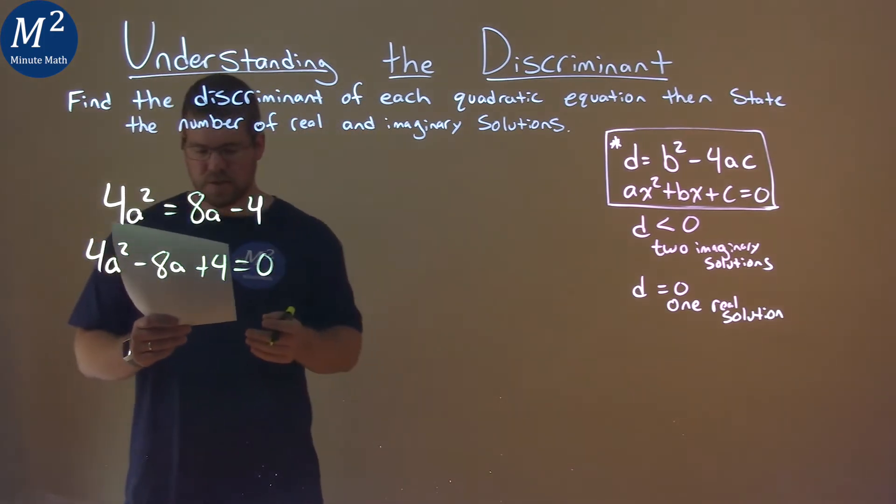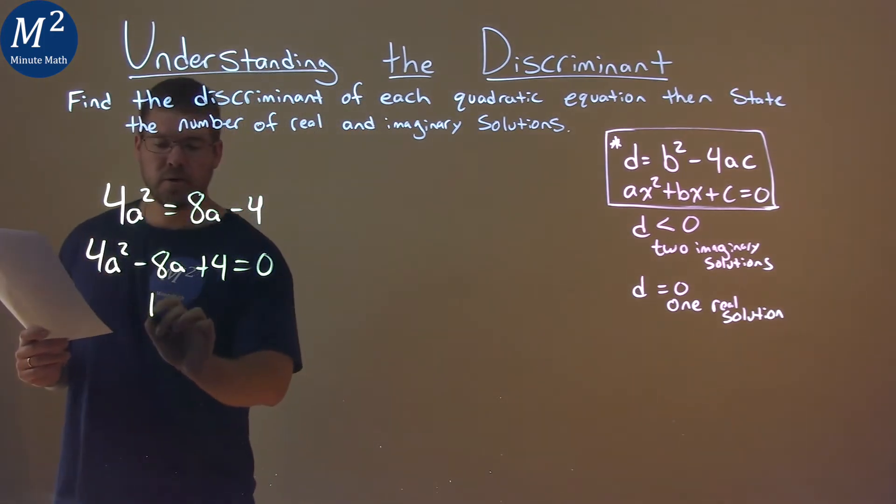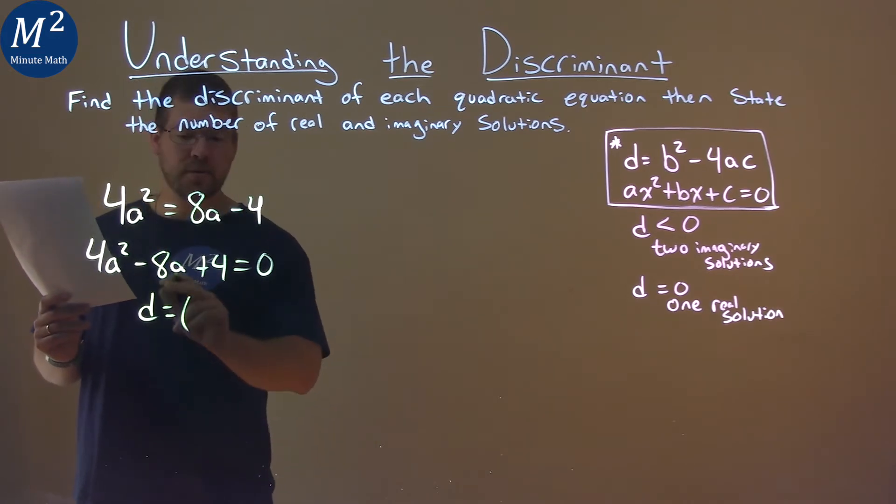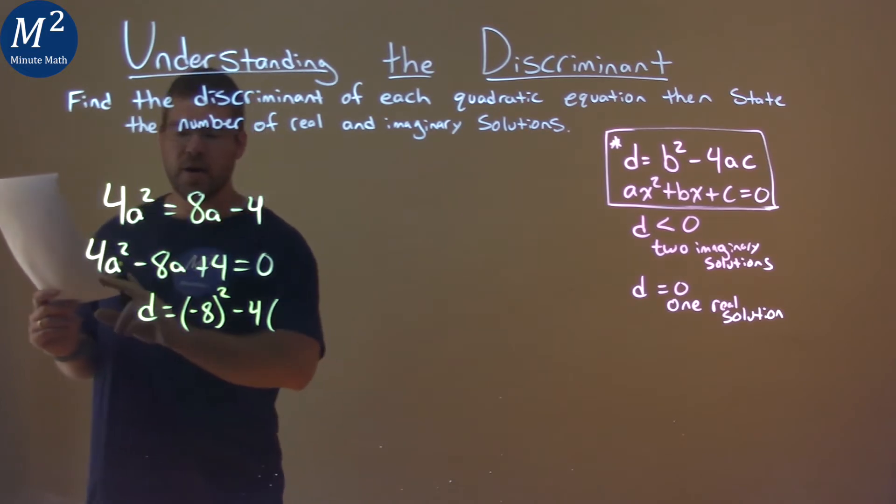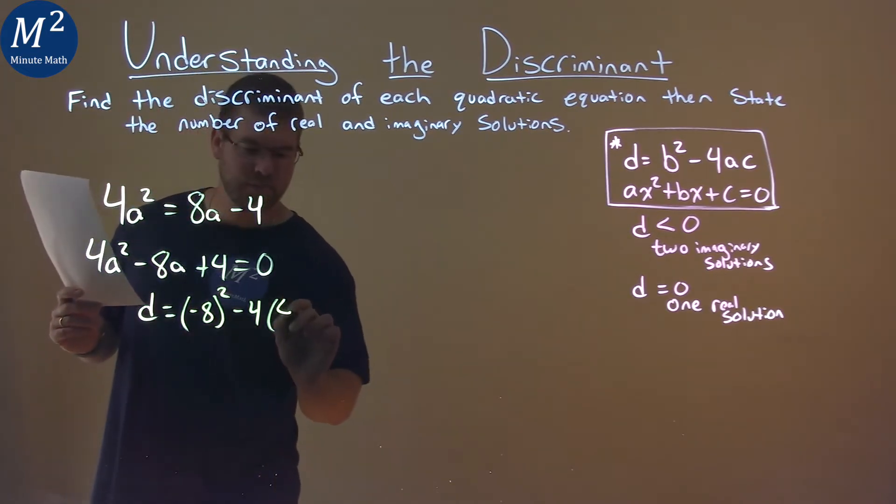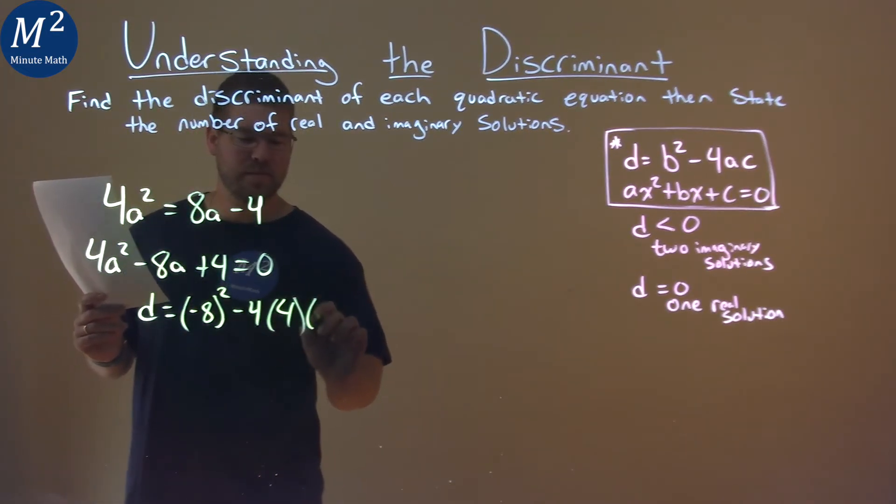Now that it's equal to zero, we can use our formula. Our discriminant is equal to our b value, negative 8 squared, minus 4 times our a value, which is also 4, times our c value, which again is 4.